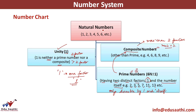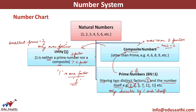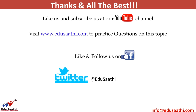The smallest prime number is 2, and it is the only even prime number. All other prime numbers — 3, 5, 7, 11, 13 — are odd, because if they were even they would be divisible by 1, 2, and themselves, making them composite. Unity (1) is not considered a composite number.